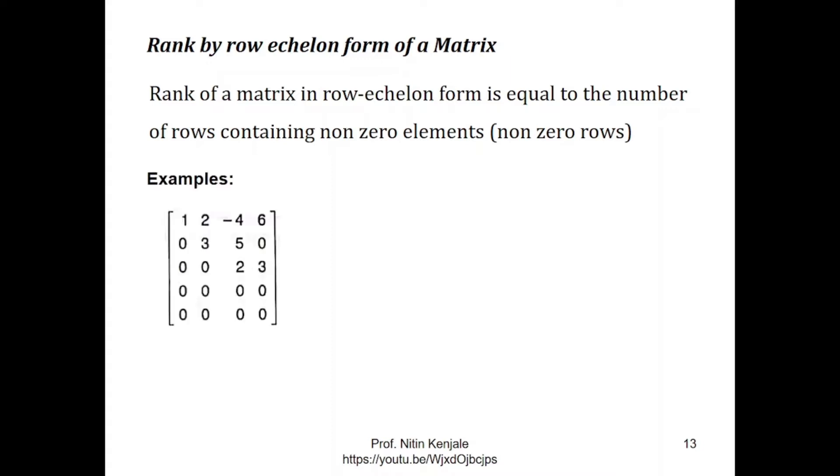For example, consider the following matrix. In this I see the number of nonzero rows are 1, 2, and 3. Therefore rank of this matrix is 3. Similarly in this second matrix the number of nonzero rows are 1, 2, and 3. Therefore its rank is also equal to 3.